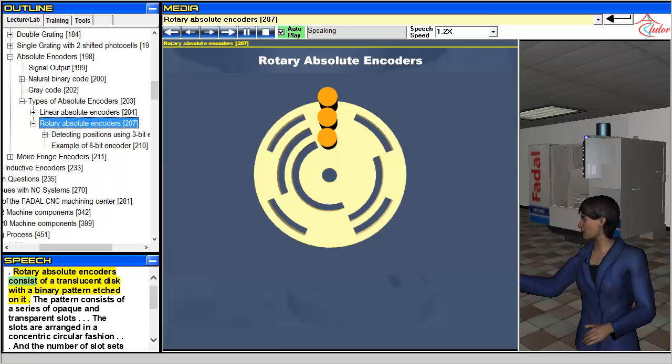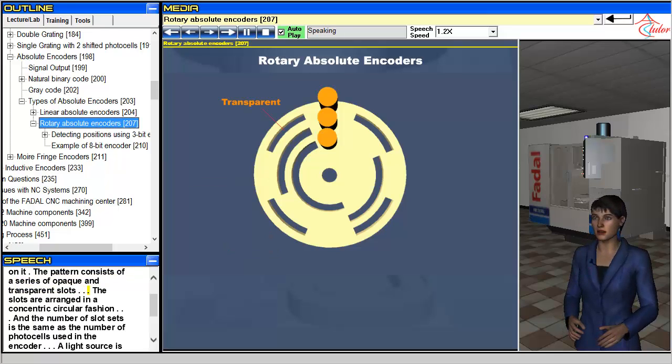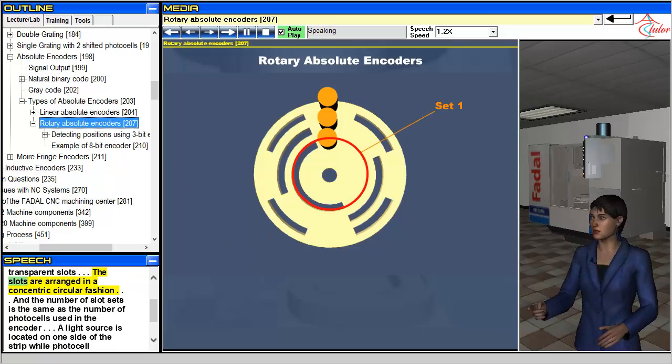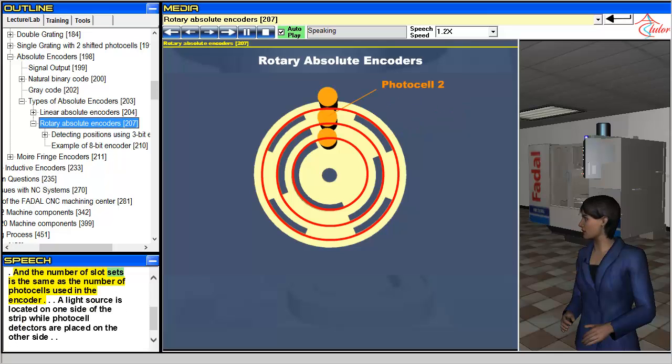Rotary absolute encoders consist of a translucent disk with a binary pattern etched on it. The pattern consists of a series of opaque and transparent slots. The slots are arranged in a concentric circular fashion, and the number of slot sets is the same as the number of photocells used in the encoder.